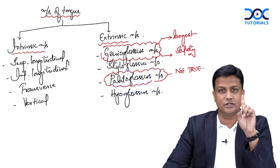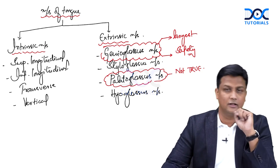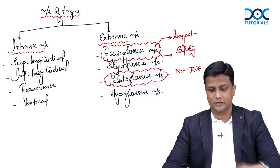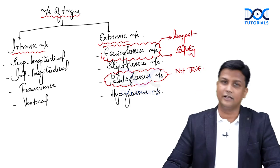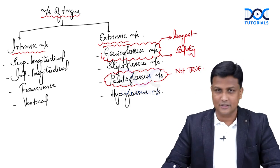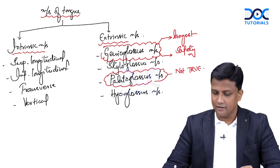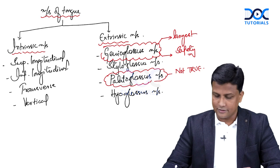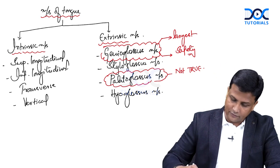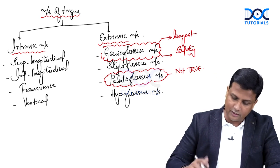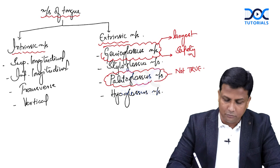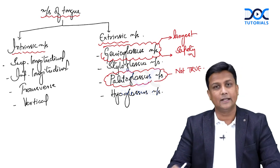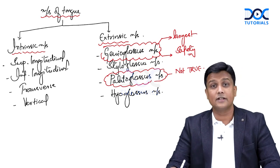So these three MCQs you must remember regarding the muscles of the tongue: the largest muscle is genioglossus; the safety muscle is also genioglossus; and the muscle that is not a true muscle of the tongue is palatoglossus. Now, once you are perfect with the muscles of the tongue, let us move towards the most important thing — nerve supply of the tongue.